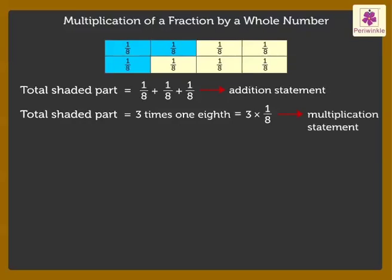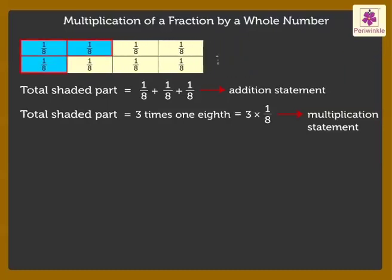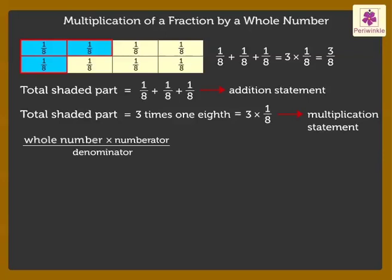Thus, putting all statements together, we write it as 1/8 + 1/8 + 1/8 = 3 times 1/8 = 3/8. Therefore, the whole number into numerator upon denominator will give us the answer. Thus, 3 × 1/8 = 3/8.